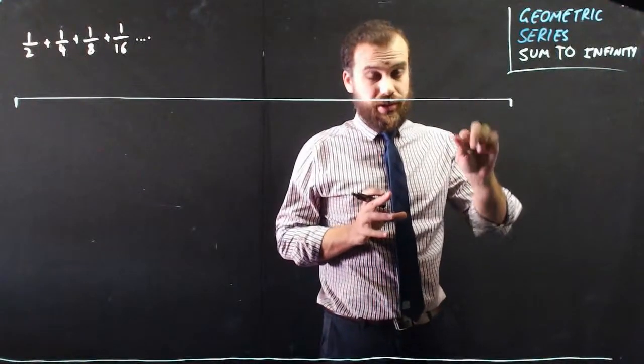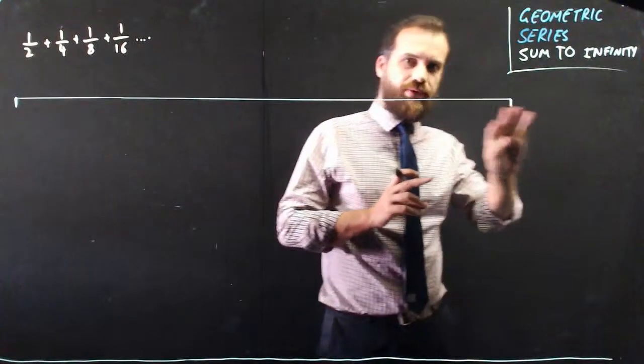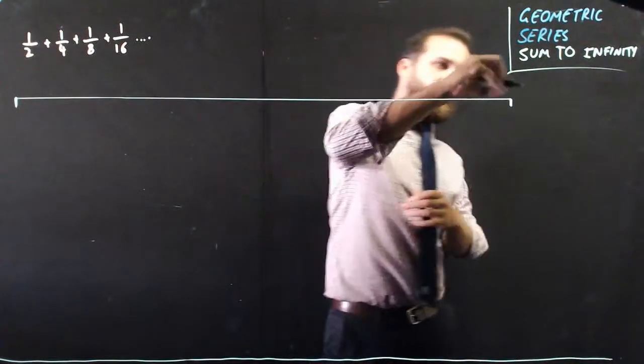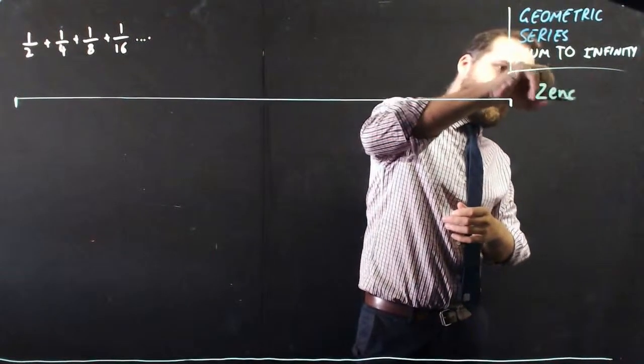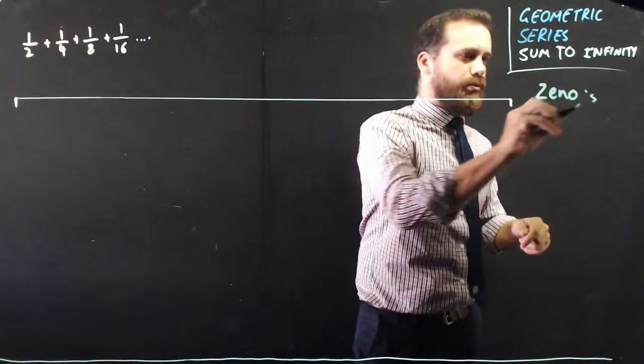Alright, so here we are, we're doing a geometric series. This time we're going to do something called Sum to Infinity. And you can't talk about Sum to Infinity without talking about an ancient Greek philosopher named Zeno, about 450 BC, Zeno's Paradox.